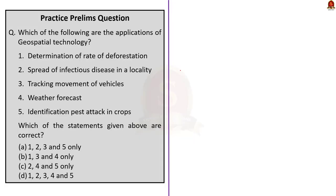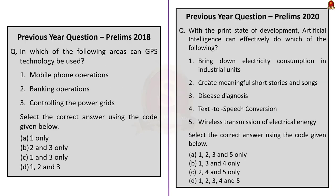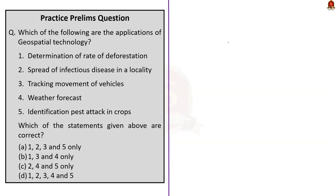Our next question is about applications of geospatial technology. This topic is gaining momentum in recent times. In 2021, the Ministry of Science and Technology released new guidelines for the geospatial sector in India. There is also a National Geospatial Policy 2022 which provides the roadmap for advancement of the geospatial sector. In UPSC, applications of technologies have been asked many times — in 2018 application of GPS was asked, in 2020 application of AI was asked. So this year UPSC might ask about applications of geospatial technology.